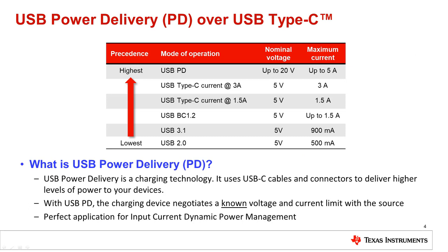The USB power delivery protocol, or PD for short, is an optional extension to the USB standard that allows a host and a device to negotiate a known voltage and current limit. Voltages between 5 and 20 volts may be offered and accepted in increments of 50 millivolts, and currents between 0 and 5 amps may be negotiated in increments of 10 milliamps. This voltage and current limit may even be dynamically updated without breaking the USB connection. USB PD is a perfect application for input current DPM, since the current supplied by the adapter is always known. Furthermore, it's important that the current-sinking device doesn't exceed the negotiated limit, or else this would be violating the PD spec.